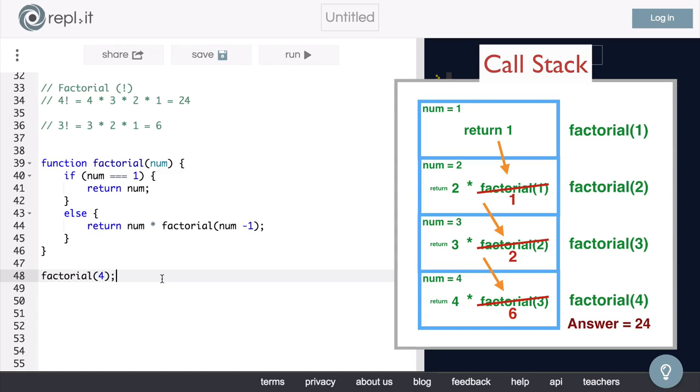Then, we unwind the call stack by returning the value of each function call until we get to the initial function call. Then, we simply return the value we are left with. And that's it. That is how recursive functions work.